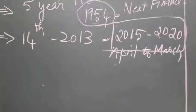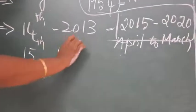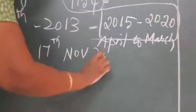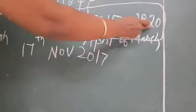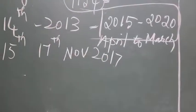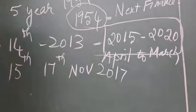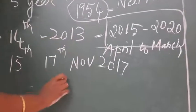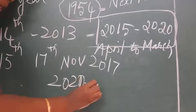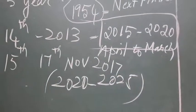The 15th Finance Commission was set up on 17th November 2017, because the 14th commission's period ending in 2020 meant they had to start planning during 2018-2019. Its work period runs from 2021, or 2020 March to 2025.